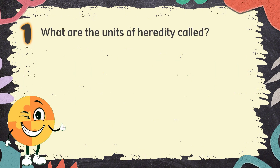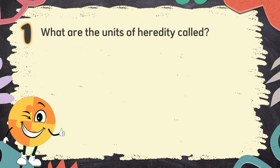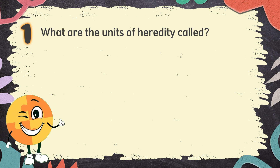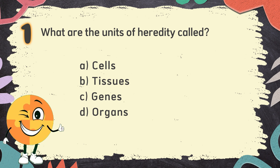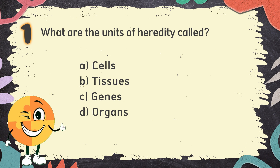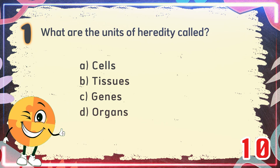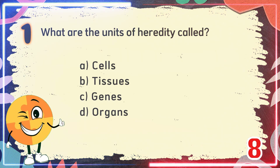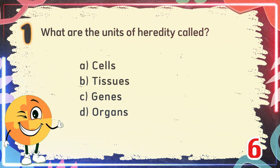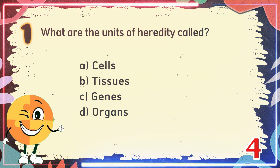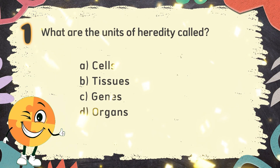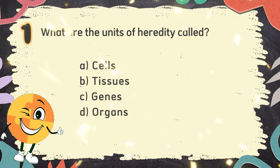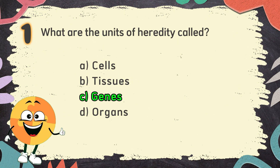Number 1. What are the units of heredity called? The choices are A. Cells, B. Tissues, C. Genes, D. Organs. The correct answer is C. Genes.